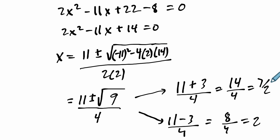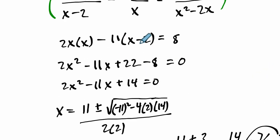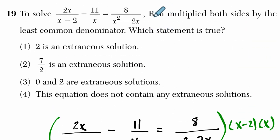So there's potentially two solutions, 7 over 2 and 2. Let's go back up. So I'm going to write that down over here. So x could equal 7 over 2, potentially, or could equal 2.